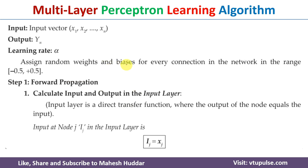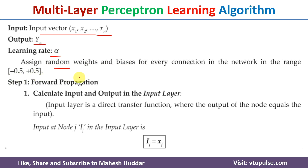Now we will discuss the multilayer perceptron learning algorithm. The input to the algorithm is the input vector — that is, the set of features — and the output is the target. We need to define the learning rate alpha. For each edge we assign weights and biases, which are usually initialized randomly in the range of minus 0.5 to plus 0.5.